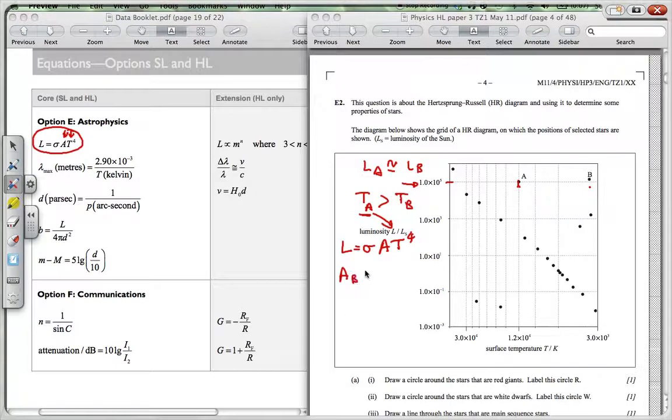A of B, the surface area of B must be greater than the surface area of A for the luminosity to be roughly the same, roughly equal. So it's very important when you explain this sort of question,